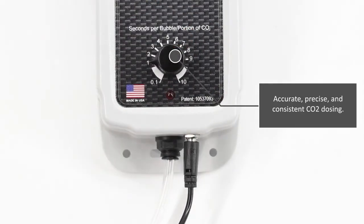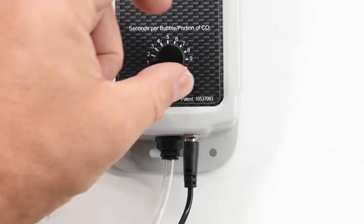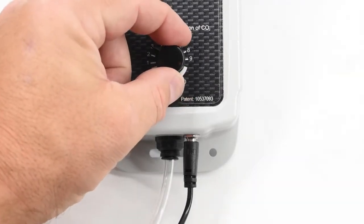Set the bubble count by using the knob on the remote box. The higher the setting, the more time between each bubble.